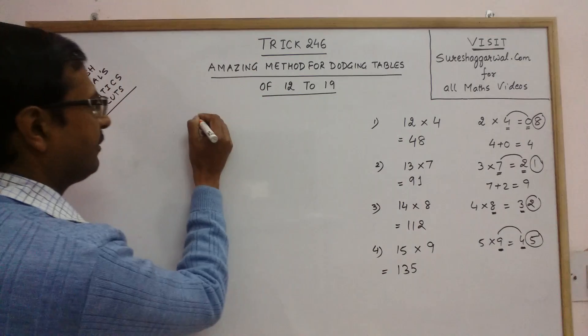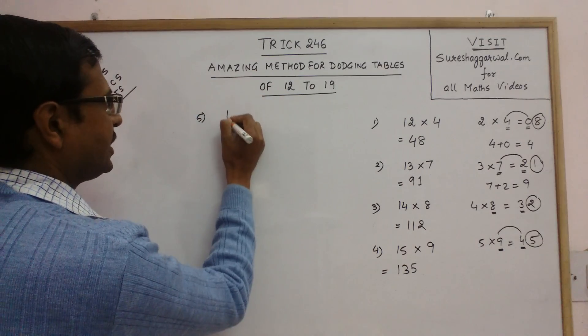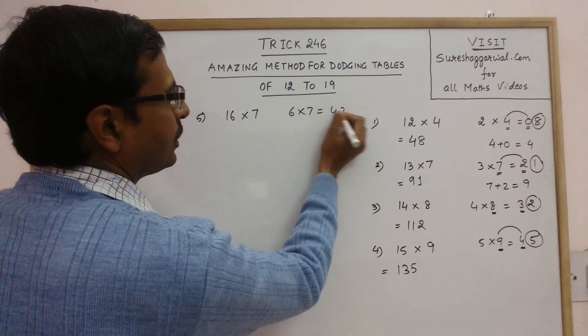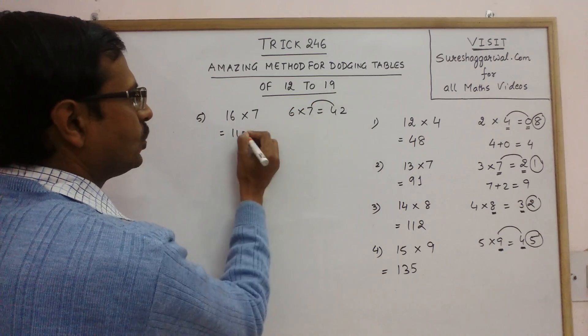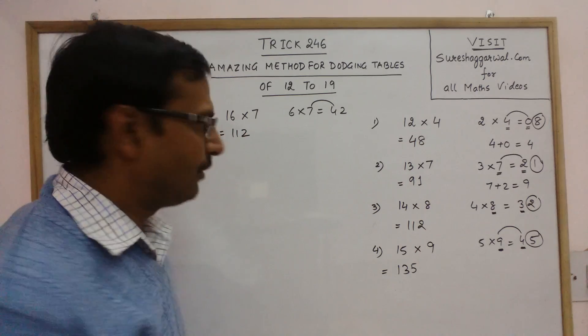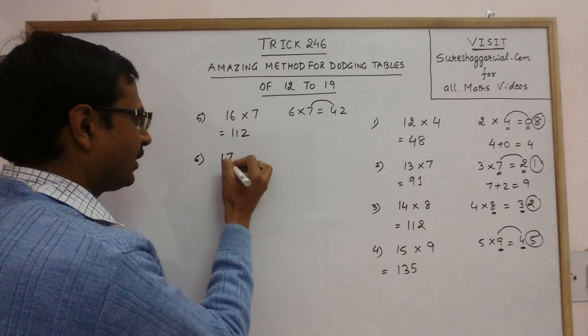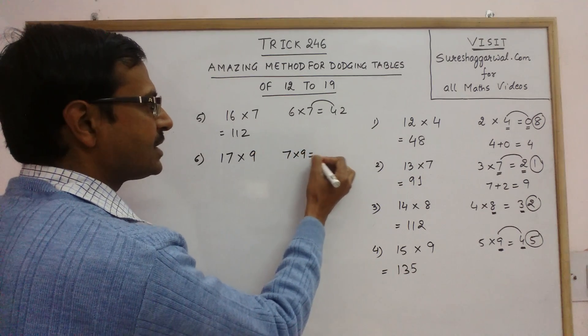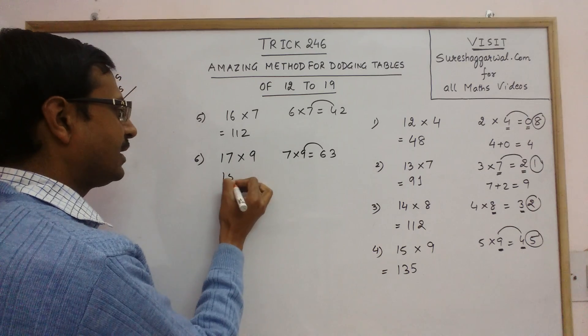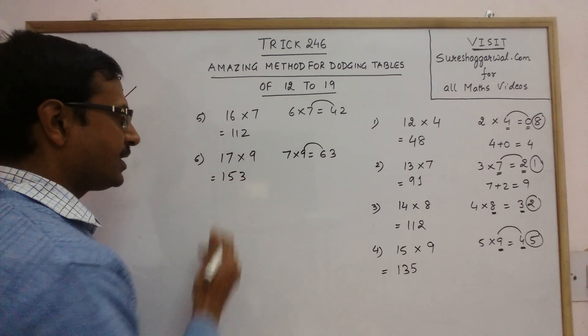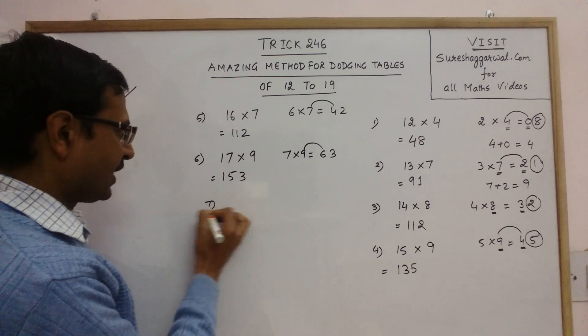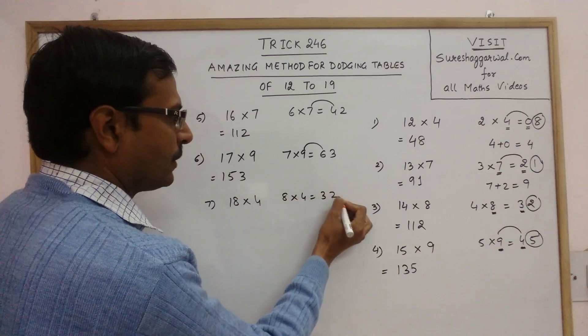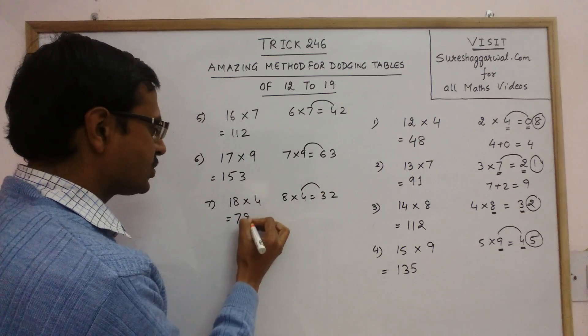Likewise another example we have 16 into 7. Now see 6 into 7 is 42. 7 plus 4 is 11. And last digit 2. So 112. Whatever dodging tables you can write all tables like this. See 17 into 9. 7 into 9 is 63. 9 plus 6 is 15. And last digit is 3, 153 is the answer. 18 into 4. 8 for 32. So 4 plus 3 is 7 and last digit is 2, 72.